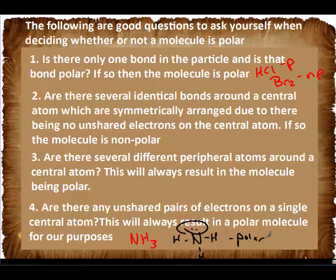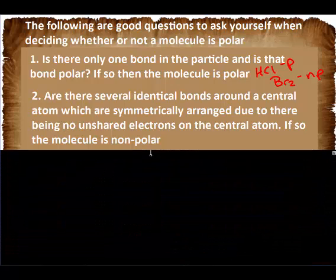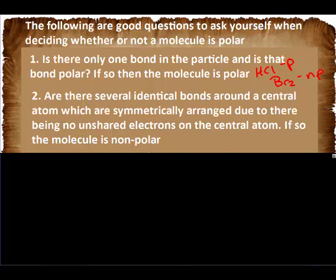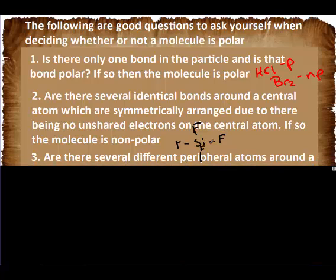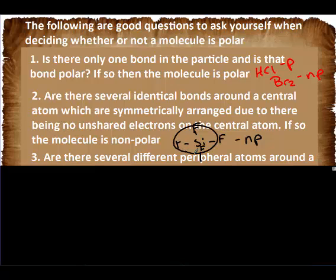Number two, are there several identical bonds around the central atom which are symmetrically arranged due to there being no unshared pairs of electrons? If so, the molecule is non-polar. So silicon tetrafluoride has silicon and fluorine on it. That is a polar bond, but the entire molecule is non-polar because it's the same thing all the way around.